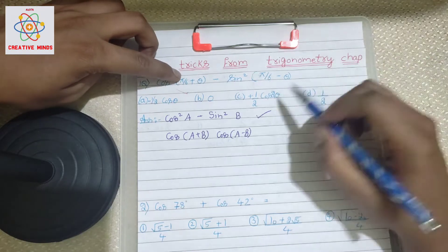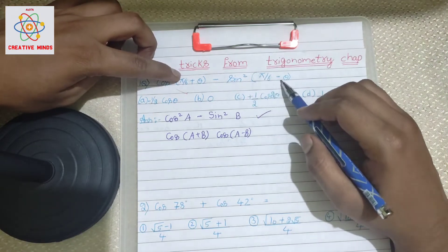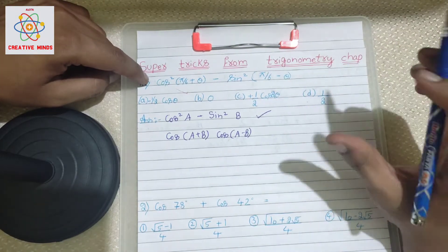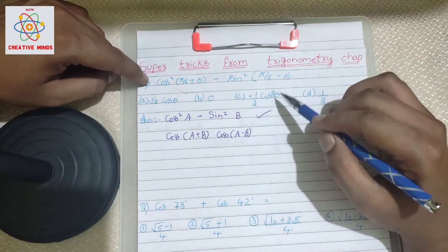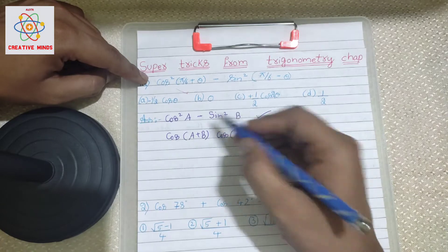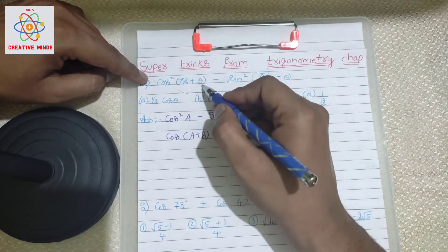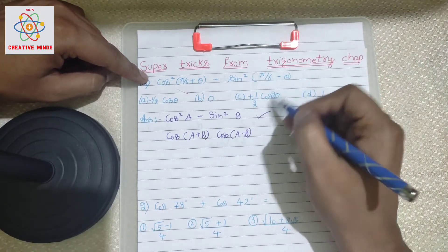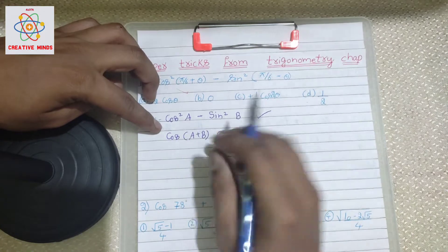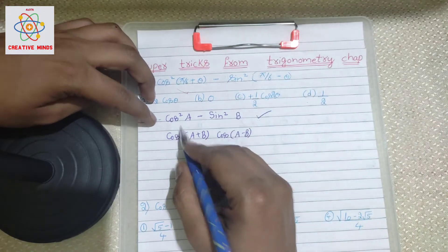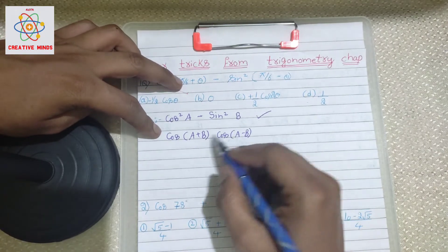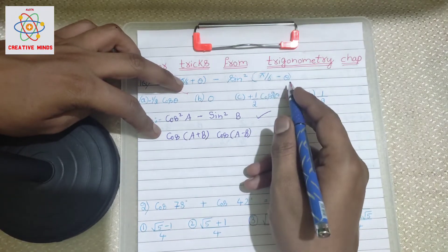The first question is: cos²(π/6 + θ) minus sin²(π/6 - θ). Whenever you come across this type of model, notice the format — cos²a minus sin²b. Here, a is π/6 + θ and b is π/6 - θ. The approach is to open this using the identity cos(a+b)·cos(a-b).